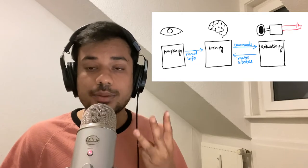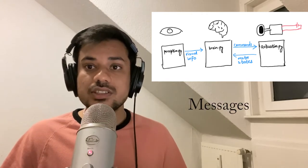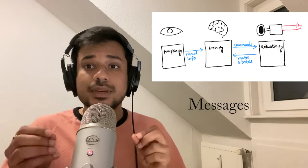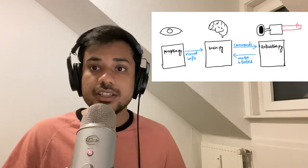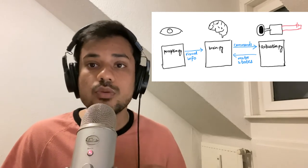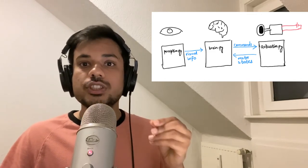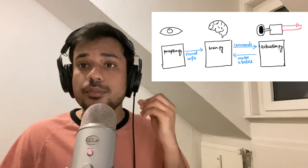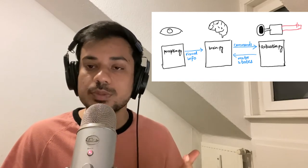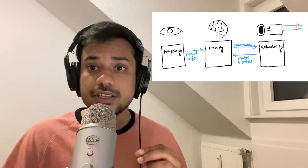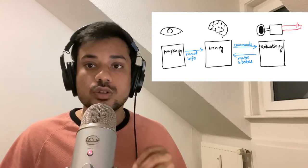Now let's tie this to the three different communication methodologies: messages, services, and actions. A message is implemented using something called a topic. A topic literally means a topic of interest to both a package which wants to talk about it and a package which wants to listen. Perception will constantly publish on the topic called VisualInfo, and brain would subscribe to that topic. A publisher is a package which talks about this topic, and a subscriber is the one who wants to know what's happening in this topic.